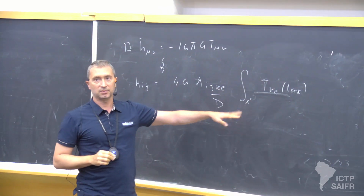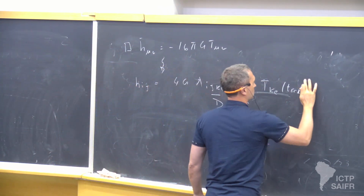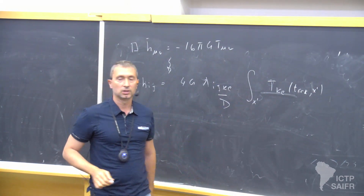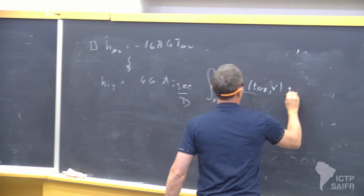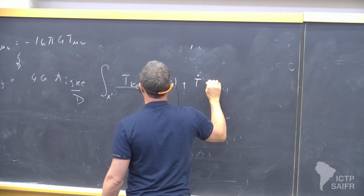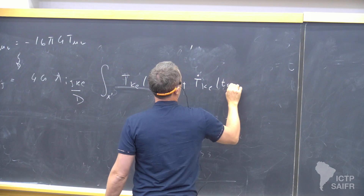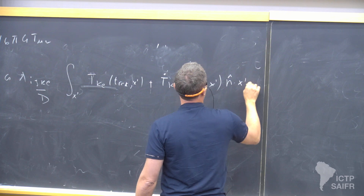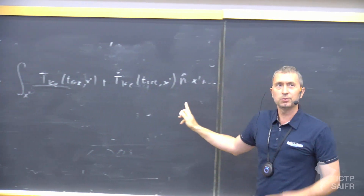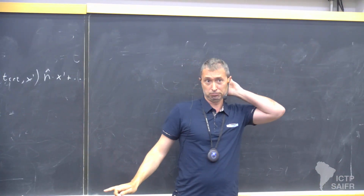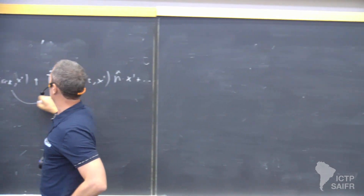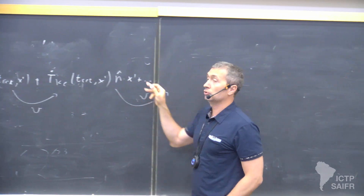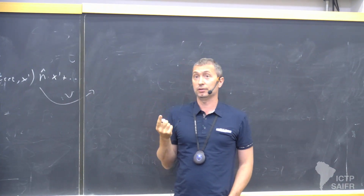Instead of writing d3x prime, I just write the measure of integration as an index here. And then we got T dot, T retarded x prime, n dot x prime. So yesterday we stopped here in this state of expansion. And we know that the small parameter that allows us to go to one order, to the following order, is v, the internal velocity of the source.